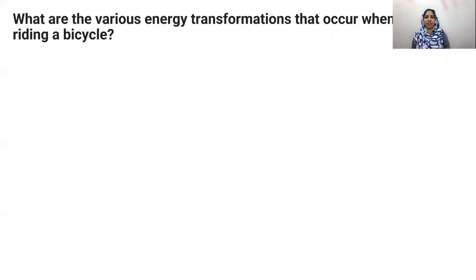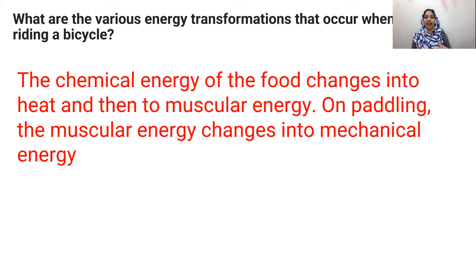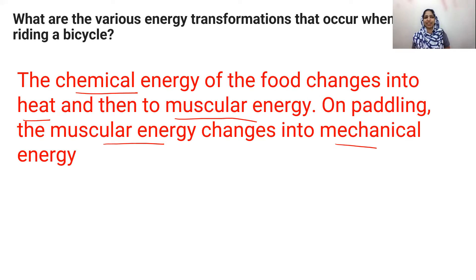Question seven: what are the various energy transformations that occur when you are riding a bicycle? We use muscular energy, which is also called biological energy, to ride the bicycle. Food provides chemical energy, which is converted into heat. That heat is converted into muscular energy. When we pedal the bicycle, muscular energy is converted into mechanical energy. So the chain is: chemical → heat → muscular → mechanical energy.